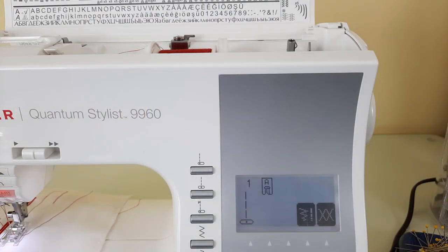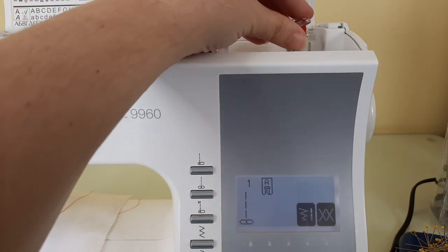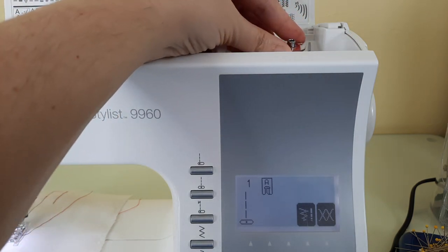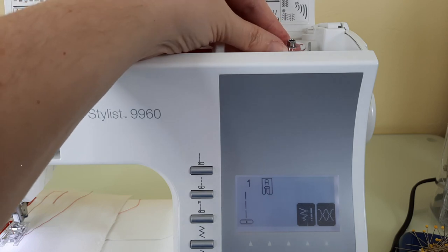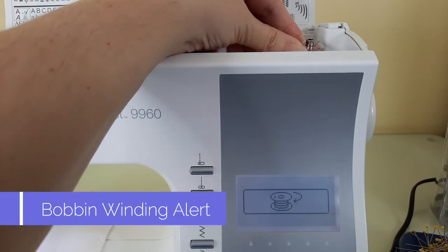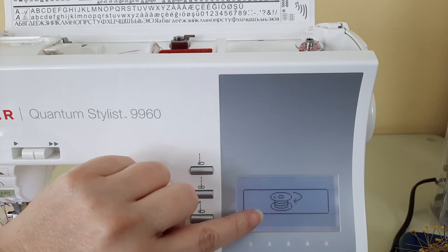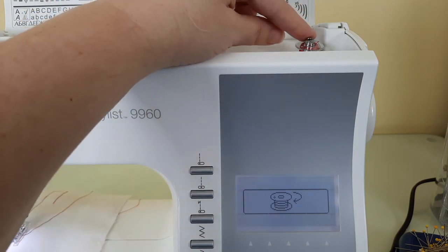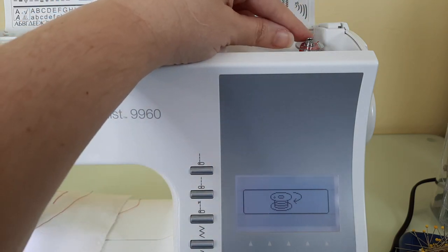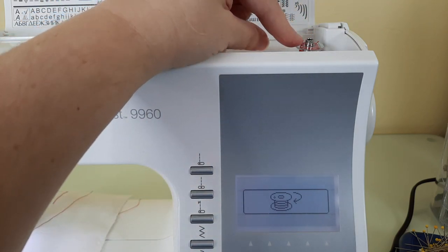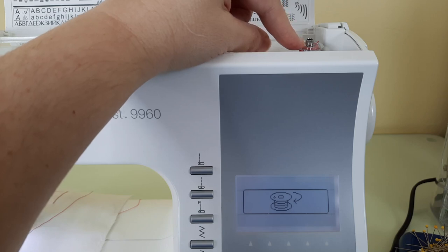Another very common alert is when you go to engage your bobbin for winding. Press it on and then gently push it to the right, and you'll notice that a little bobbin winding icon will appear in your LCD screen. This is letting you know that your bobbin winding mechanism is engaged.